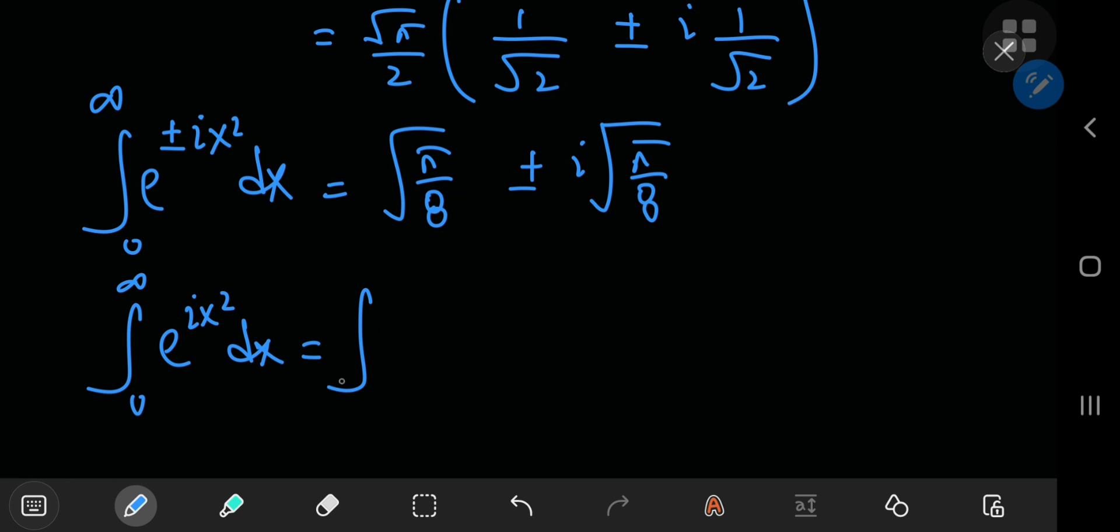which is equal to the integral from 0 to infinity, once again, using Euler's formula, we have the cosine of x squared plus i times the integral from 0 to infinity of sine x squared dx. This is equal to square root pi by 8 plus i times the square root of pi by 8.